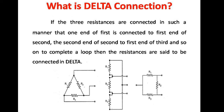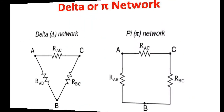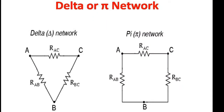Now let us see how we can connect three resistances in delta manner. It can also be called as a pi network. The first diagram shows the delta network and the second diagram is shown as a pi network.